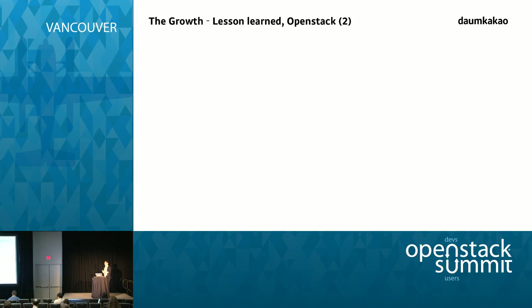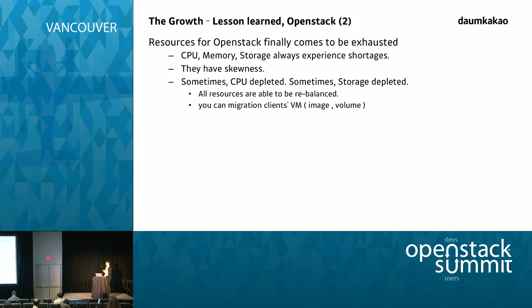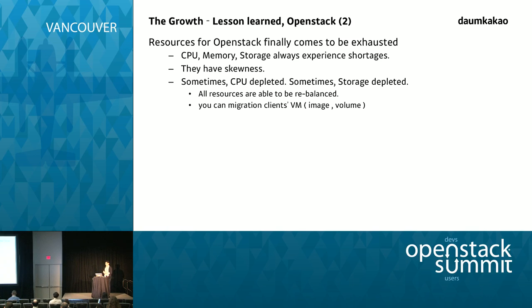For OpenStack, we also learned something. Resources for the OpenStack VM will eventually run out — CPU and memory are always experiencing shortages. And there are imbalances: in some zones, CPU is exhausted first; in other zones, storage runs out first. So to make it even, every resource could be a candidate for rebalancing — you can move VMs to another zone or another available rack.